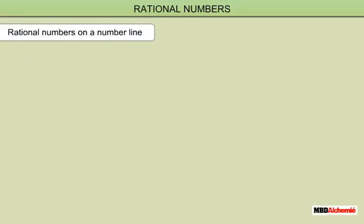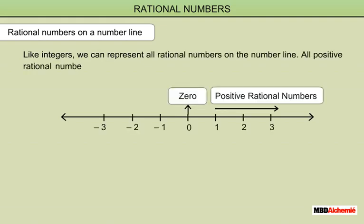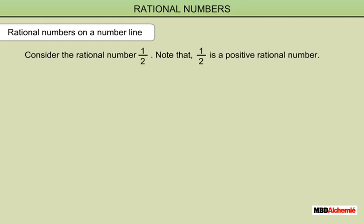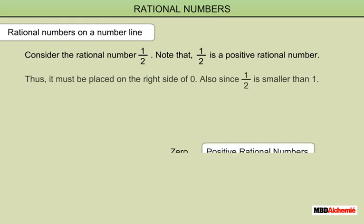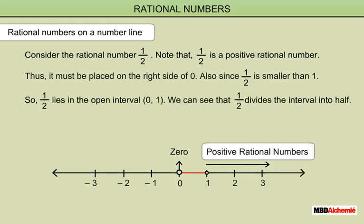Rational Numbers on a Number Line: like integers, we can represent all rational numbers on the number line. All positive rational numbers are represented on the right side of 0, and all negative rational numbers are represented on the left side of 0. Consider the rational number 1 upon 2. Note that 1 upon 2 is a positive rational number, so it must be placed on the right side of 0. Since 1 upon 2 is smaller than 1, it lies in the open interval 0 to 1. We can see that 1 upon 2 divides the interval into half.